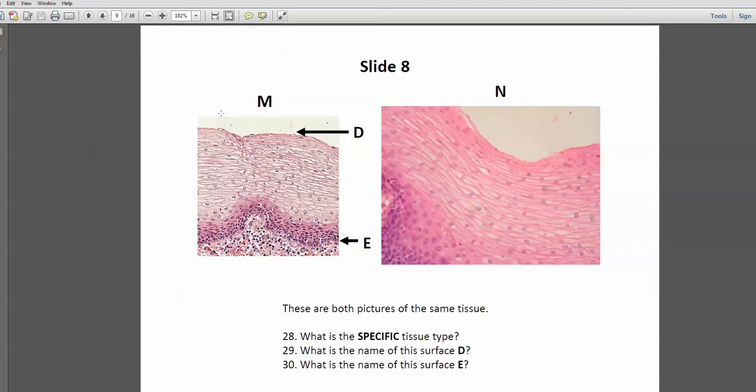Number 8. We have a free space. We have cells forming sheets. You can see bunches and bunches of nuclei. So we know this is epithelial. Now we need to identify whether it's stratified or simple, and obviously there are multiple layers, so it's stratified. And now we have to identify shape, and obviously at the apical surface the cells are flat. So this is stratified squamous epithelial.